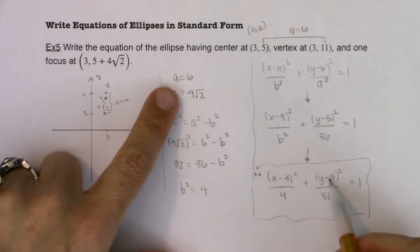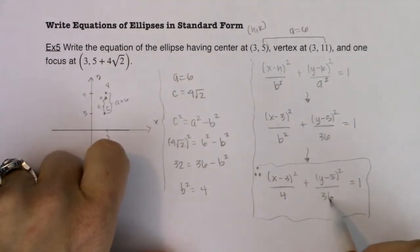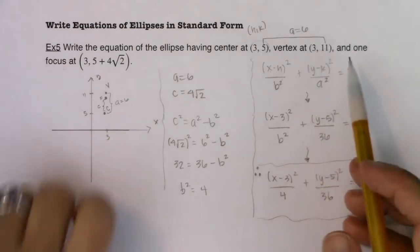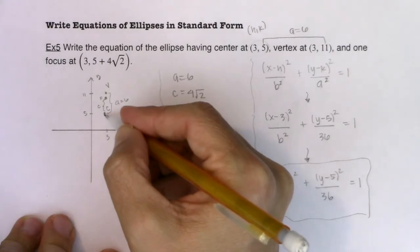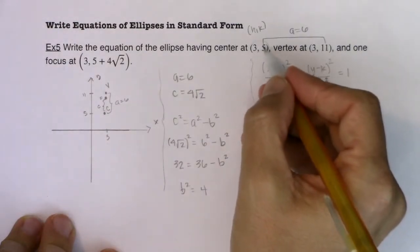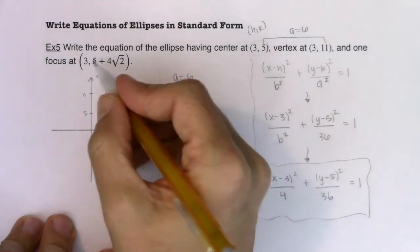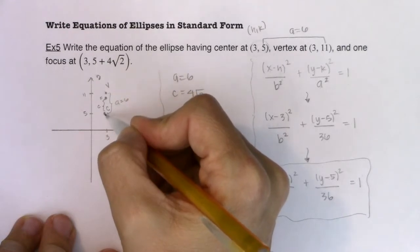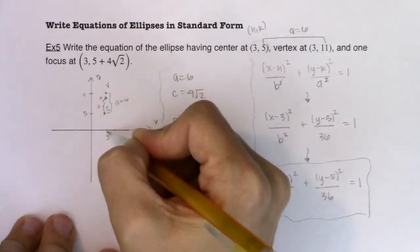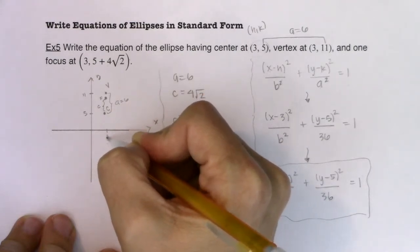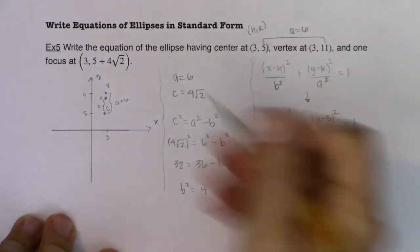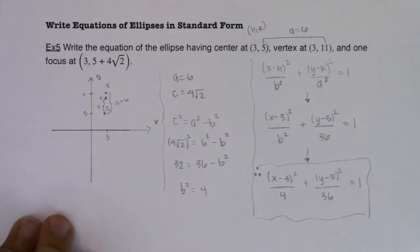Sure enough, it does have a center at (3, 5). Because a is 6, it would have a vertex at (3, 11). Just if we're keeping in line with what we've done before, it would also have a vertex at (3, -1). Because if I subtracted 6 from this y coordinate, I'd be down here at -1. I have a focus at (3, 5 + 4√2). And just so we're staying consistent with what we did before, I have a focus at (3, 5 - 4√2). So there'd be another focus and then a vertex down here. And because I found the b value, I could also go get the co-vertices or the intercepts, as some folks call them.